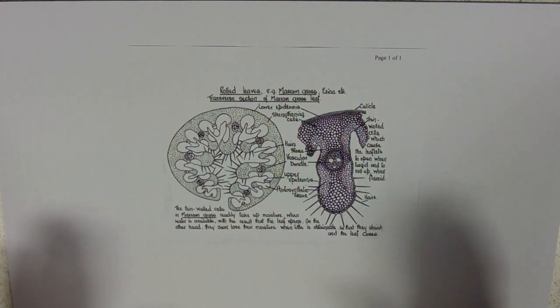Anyway, so drawing down a microscope, she's drawn a marram grass leaf down a microscope. I don't want you to worry too much about abaxial and adaxial leaf surfaces.